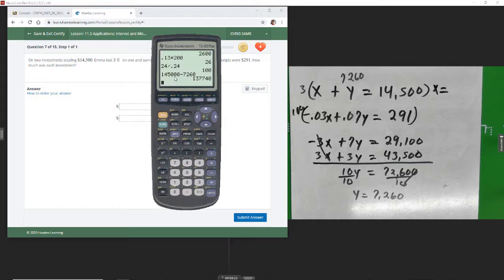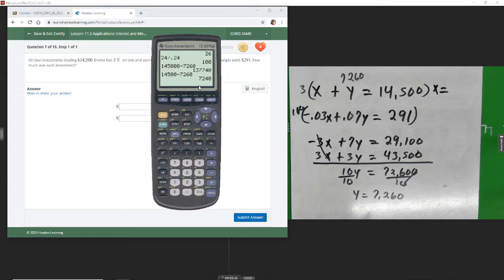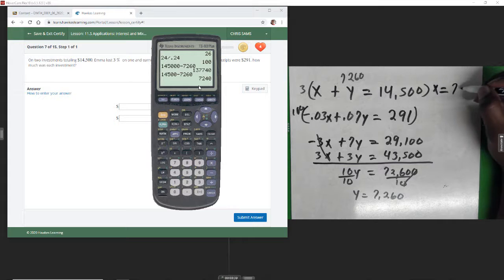Okay, I got one too many zeros there, so let's try this again. $14,500 minus $7,260. So we get $7,240. Almost the same amount, so we get x equals $7,240.